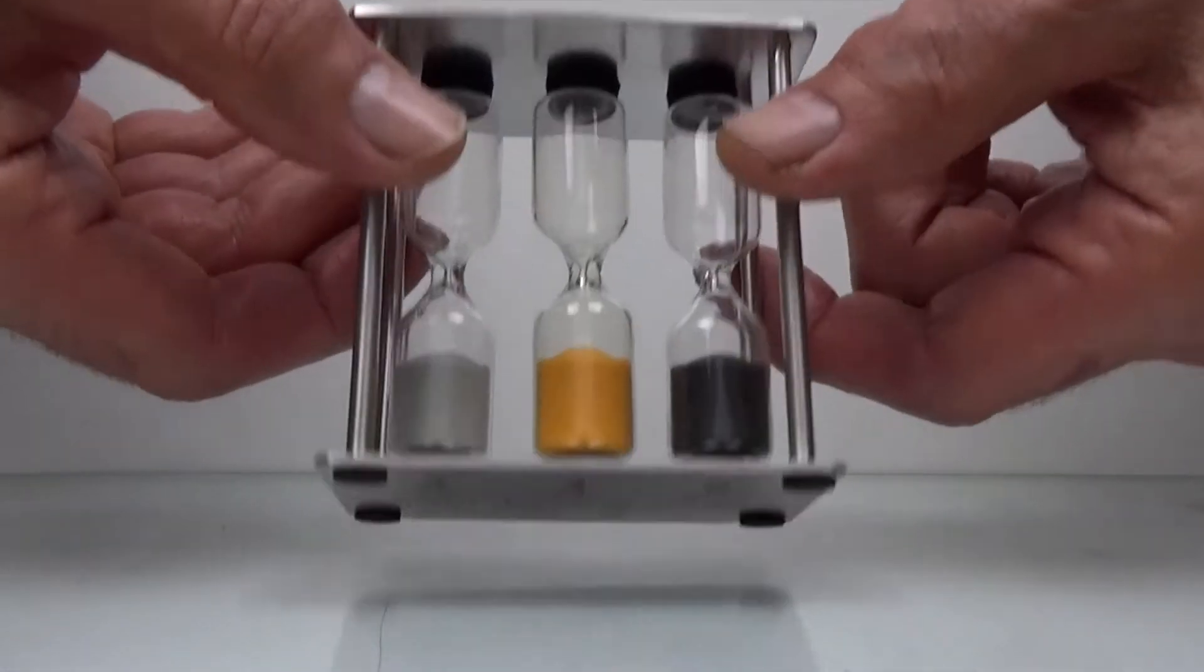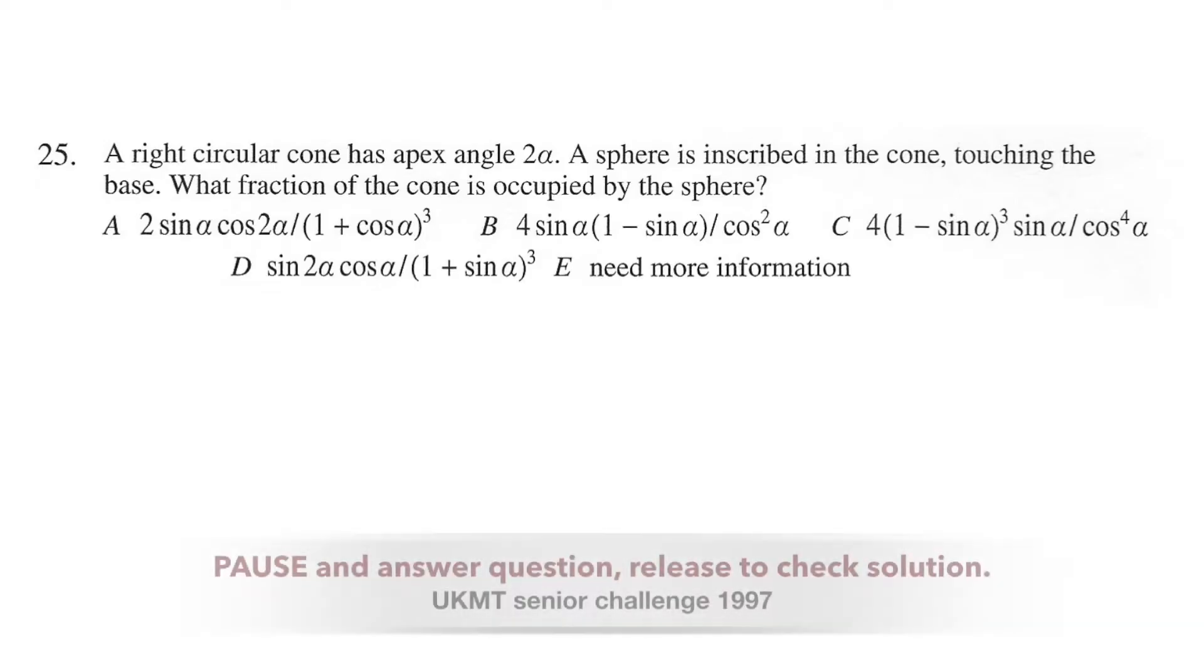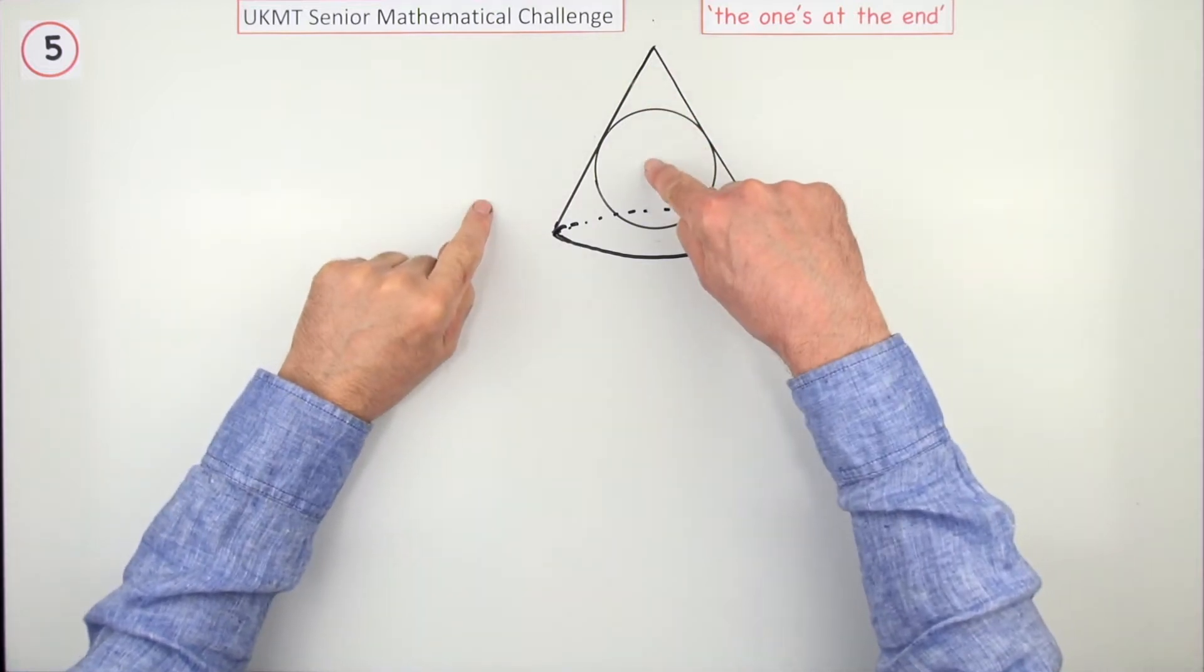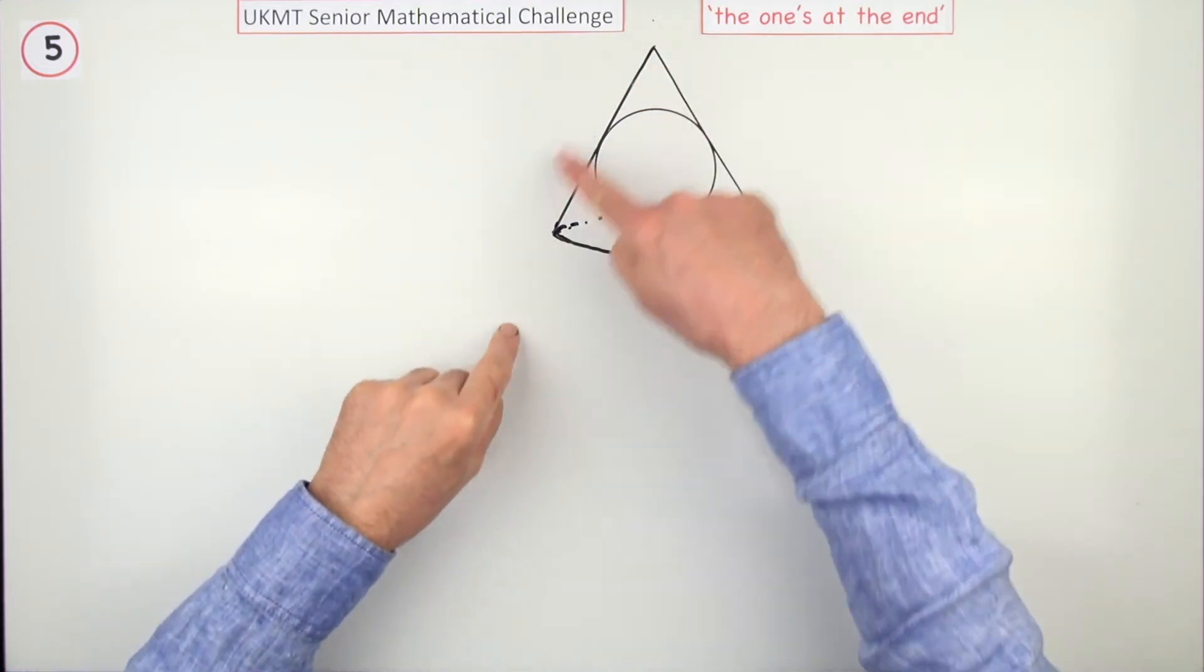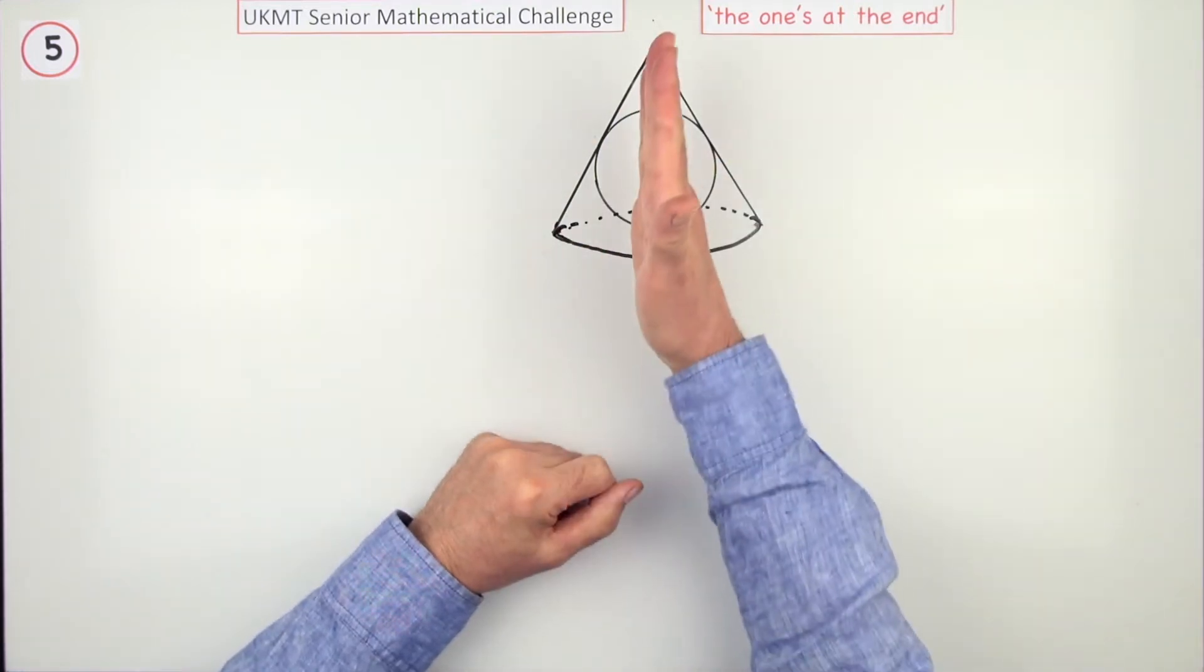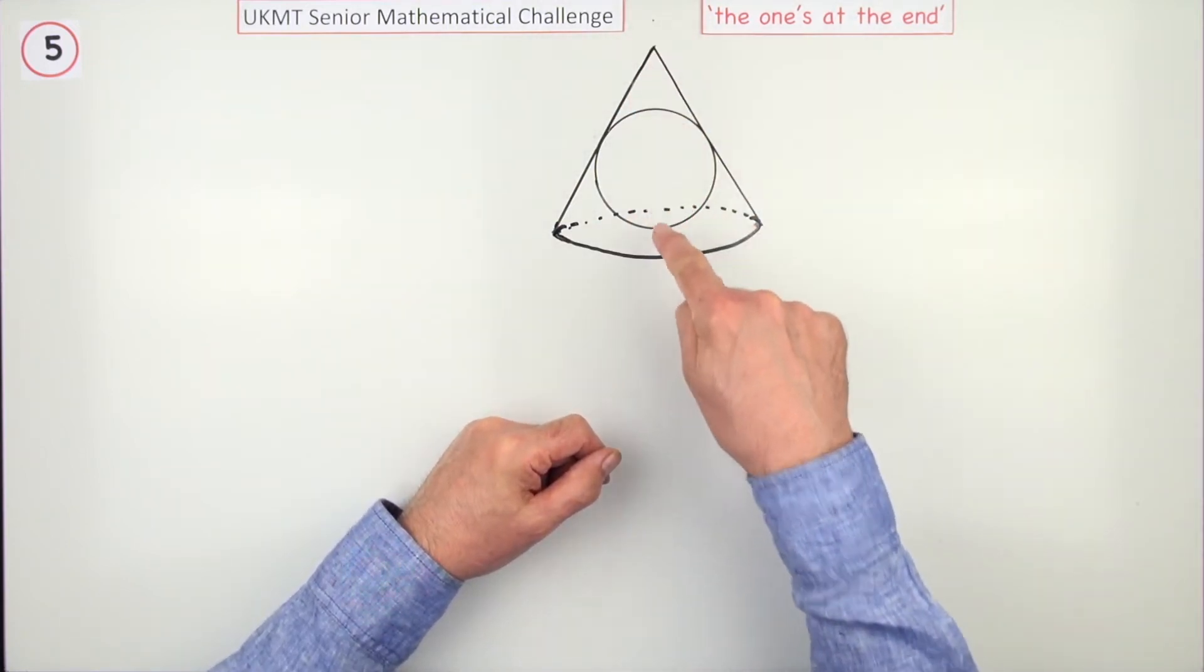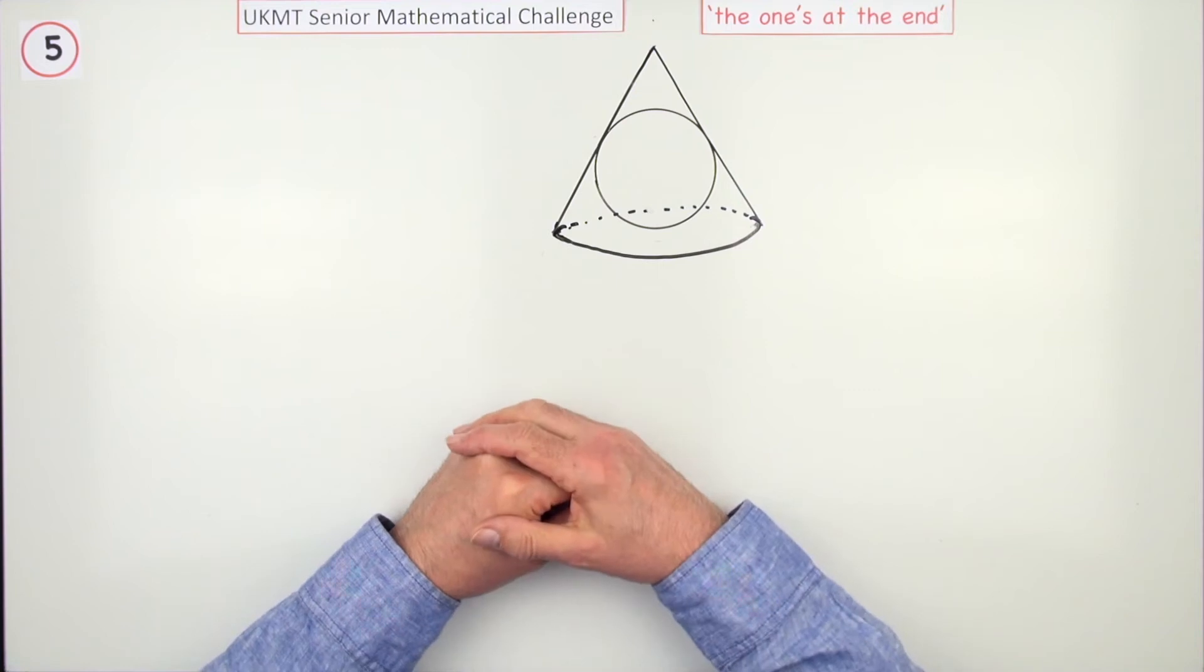So, ready, and go. The largest sphere inscribed in a right circular cone - right meaning it's symmetrical, the apex is directly above the centre of the base circle.